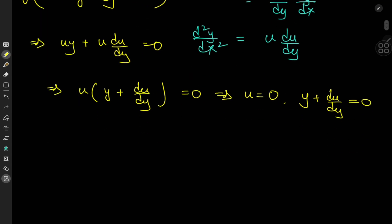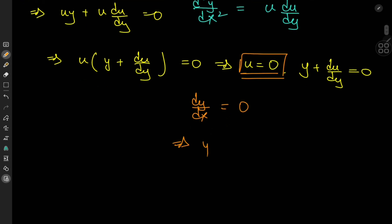And the first of these equations, that is u equal to 0. Recall that u is in fact dy by dx, so we have dy by dx equal to 0. And this is true if y is some constant, so we have y equal to some constant of integration c.